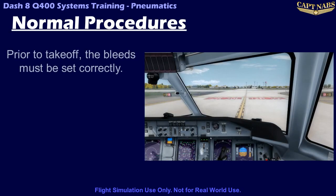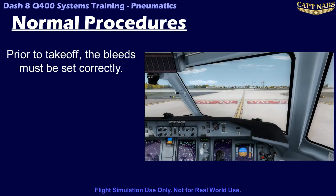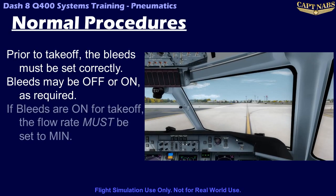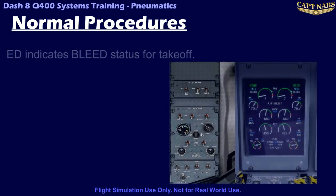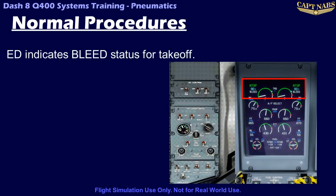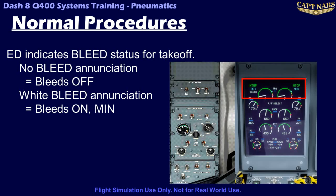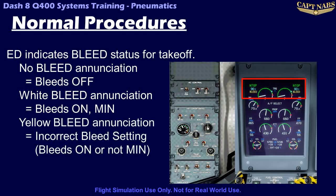If a bleeds-off takeoff or landing is required, such as for reduced or maximum power takeoffs, the bleeds are selected back off prior to takeoff. Even if the bleeds can be on for takeoff, the airflow must be set to min for takeoff and landing. Note that a reminder is displayed on the ED for the bleed status relative to the takeoff power setting. If no bleed annunciation appears, then the bleeds are currently selected off. A white bleed annunciation indicates that the bleeds are on and set to min. A yellow bleed annunciation on the ED indicates an incorrect bleed setting for takeoff — either the bleeds are on when they must be off, or the bleed setting is not at min. Once the bleed system is configured correctly, the yellow bleed annunciation turns white or disappears if the bleeds are off.